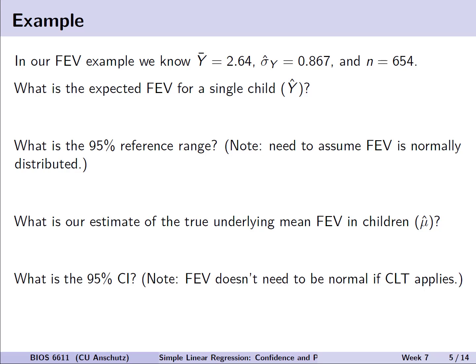As just a very simple example not in a regression context, let's consider our FEV dataset where we know that the mean FEV is 2.64 liters, the standard deviation is estimated to be 0.867, and we have a sample size of 654 adolescents from ages 3 to 19. Now you can pause the video here for a second and we're going to walk through the questions on the slide here and their solutions.